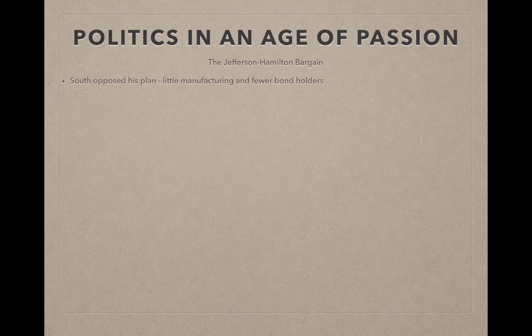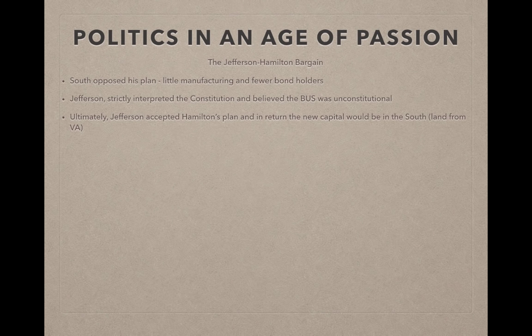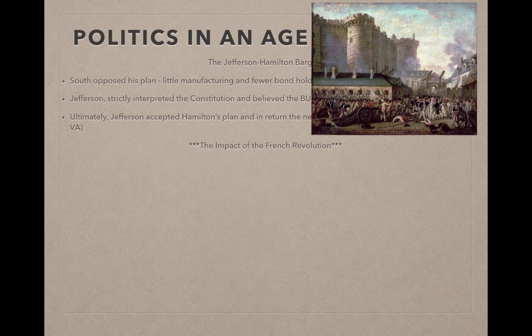Getting the South to support Hamilton's plan was a major challenge. Jefferson strictly interpreted the Constitution and believed the BUS was unconstitutional. Ultimately, the two got together over dinner and Jefferson agreed to support the plan and bring the South on board — if the new capital would be built in the South, on land from Virginia. This is why Washington D.C. is located in the South.